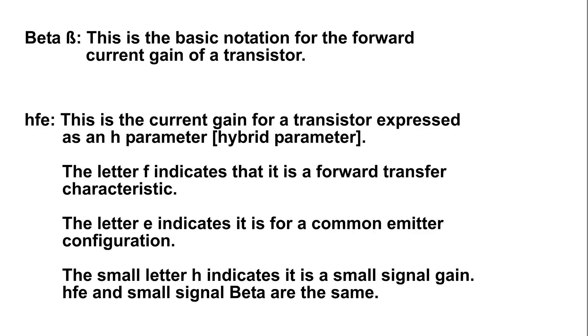And they use H, hybrid parameter. They had to call it something other than B. F is the forward transfer of characteristics, and E is common emitter configuration.